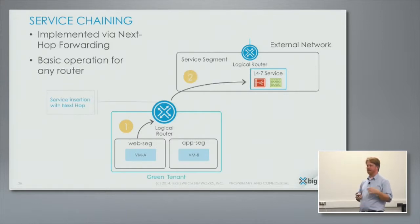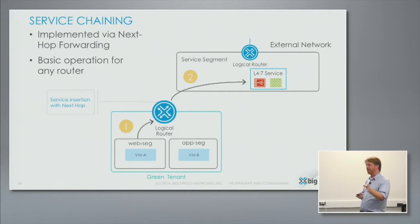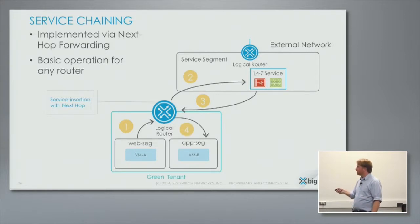That other thing can be a firewall, can be a load balancer, can be an intrusion detection device, can be anything you want at an IP level. It works on a next-hop basis. And then this device here has a default route that points to the logical router.